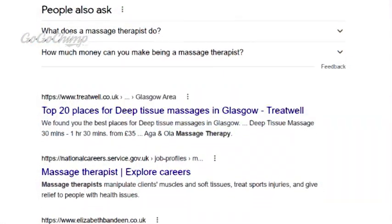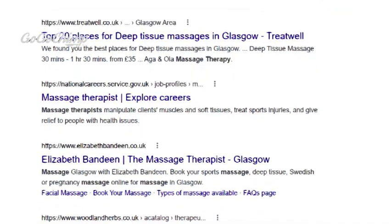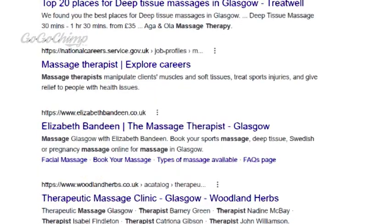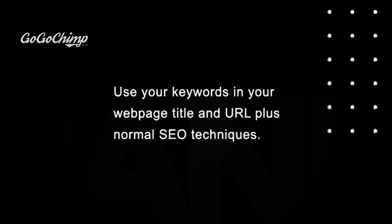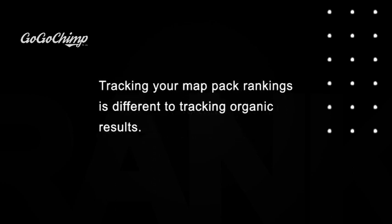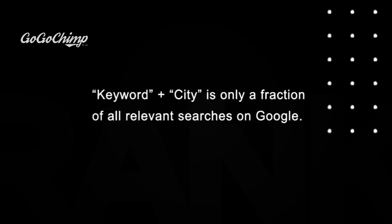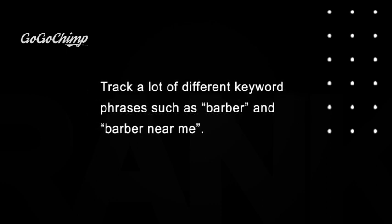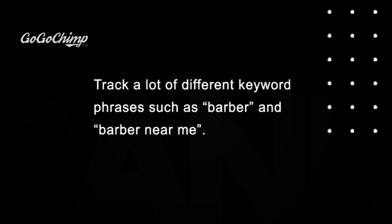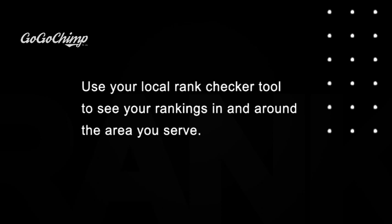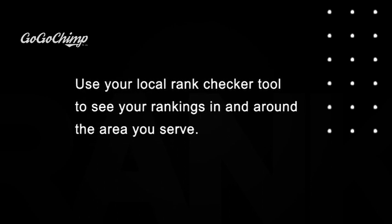That said, you don't want to completely ignore the traditional local organic results. Don't think it's map pack or nothing, because most local searches have an insanely strong commercial intent, so it's totally worth ranking for local organic results too. Unlike map pack results, local organic results are basically the same for any Google search. To optimise your site for local organic rankings, use your keywords in your title tag, your URL, and all traditional on-page SEO elements. Remember, store-plus-city only makes up a fraction of all local results, so in addition to for example 'Boston Barber' you also want to track rankings for keywords like 'barber' and 'barber near me', specifying the location in your rank tracking tool.